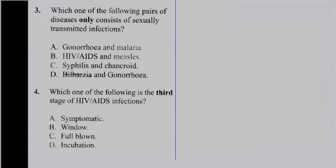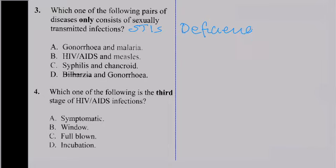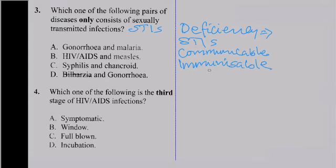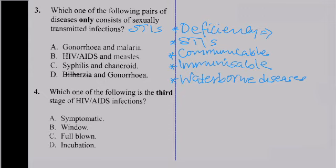Question three says: 'Which one of the following pairs of diseases only consists of sexually transmitted infections — STIs?' We have different classes of diseases: deficiency diseases, STIs, communicable diseases, immunizable diseases, and waterborne diseases. Deficiency diseases are diseases we contract when the body lacks certain nutrients, such as rickets and marasmus. There is no way you can contract marasmus from someone.